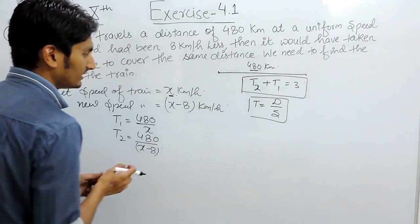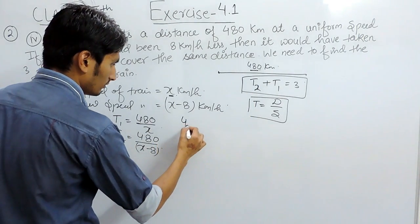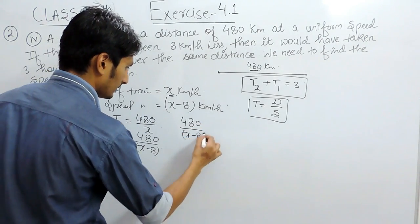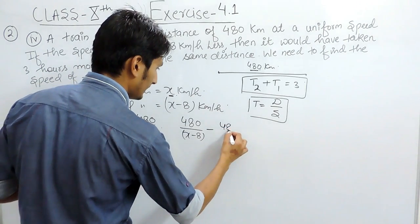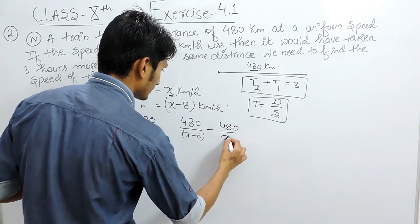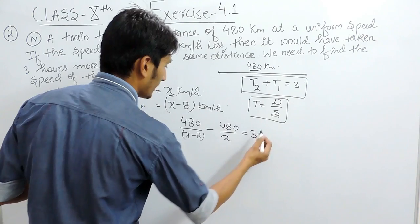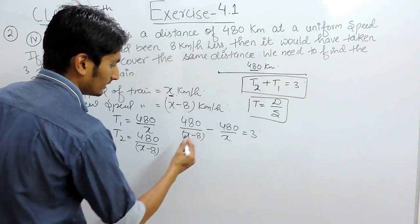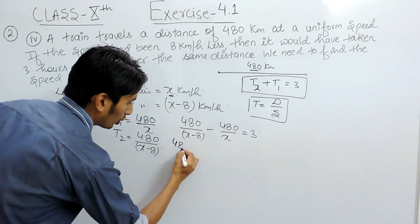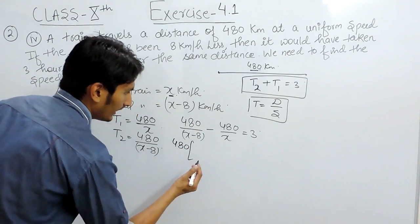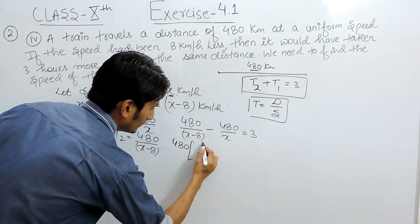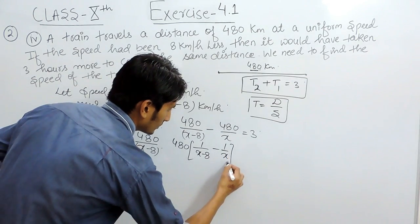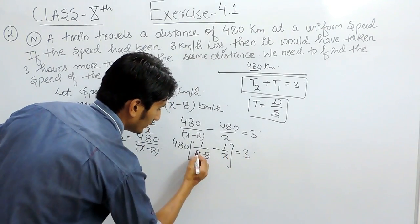We know that the difference between these 2 times, which is 480 upon x minus 8 minus 480 upon x, is basically 3 hours. Now you can solve it. You can take 480 as common, and we are left with 1 upon x minus 8 minus 1 upon x equals 3.